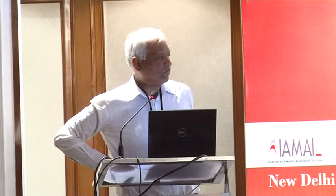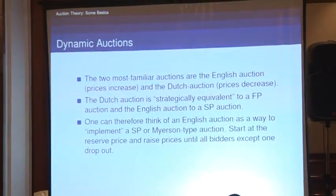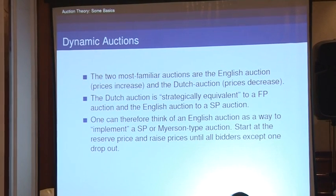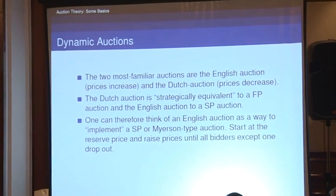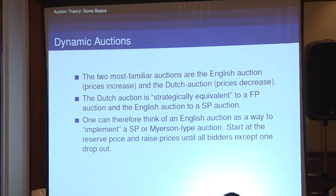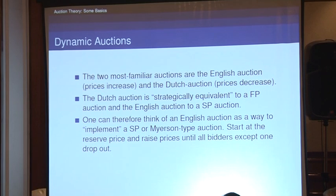A second price auction has some very important properties. The three most familiar auctions are the English auction, where prices increase from the reserve price upwards, and the Dutch auction, where prices decrease from a high value until one person accepts. The Dutch auction is strategically equivalent to a first price auction, and the English auction is equivalent to the second price auction, where the winner pays a little more than the bid of the second highest bidder.